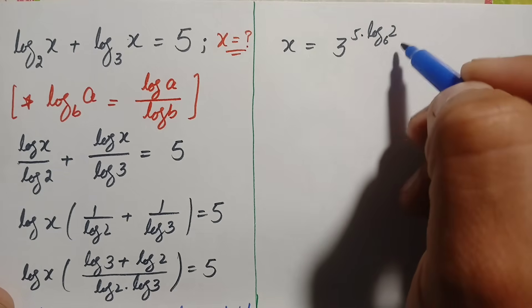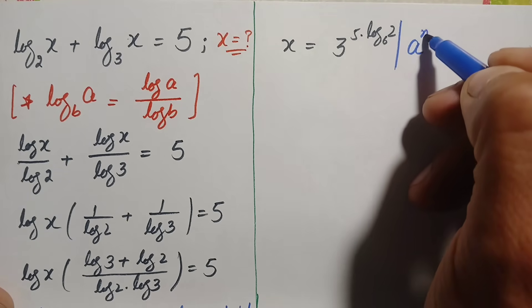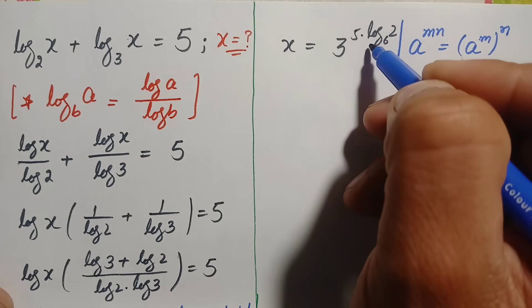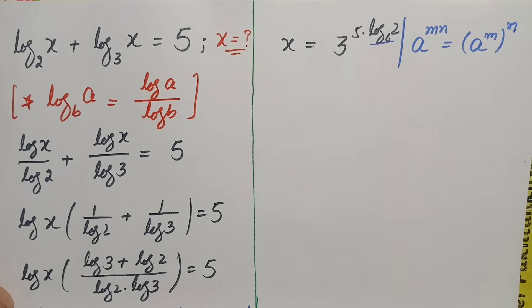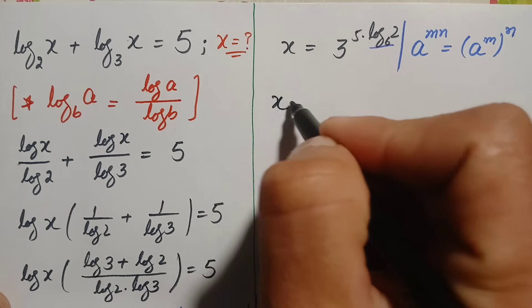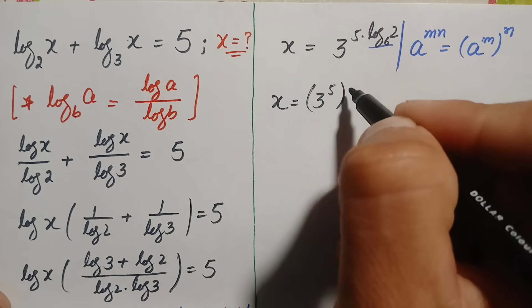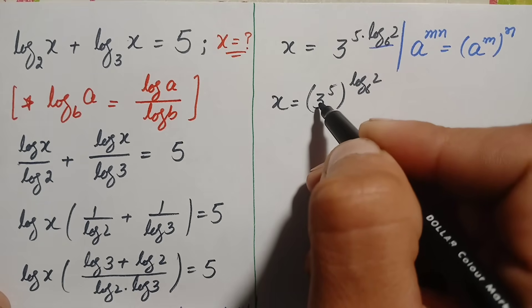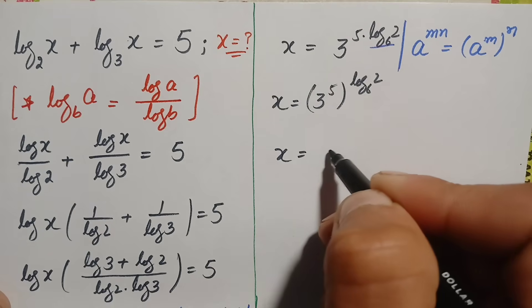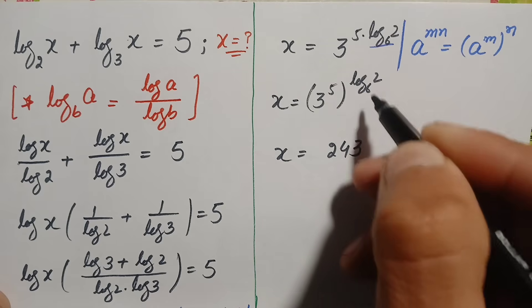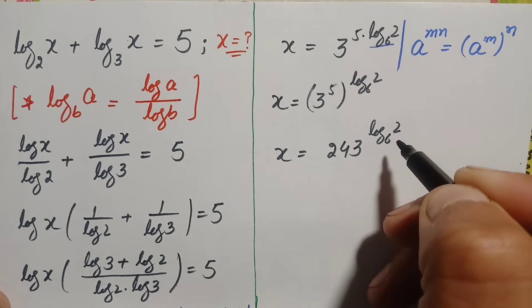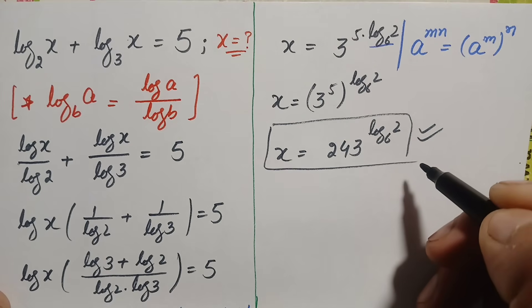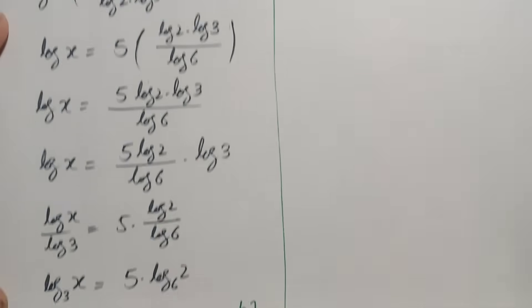On the right hand side we apply the exponential identity: a raised to power (m times n) equals (a raised to power m) raised to power n. So we separate the power, giving x equals (3 raised to power 5) raised to power (log of 2 with base 6). Since 3 raised to power 5 equals 243, we get x equals 243 raised to power log of 2 with base 6. This is our answer using the first approach.